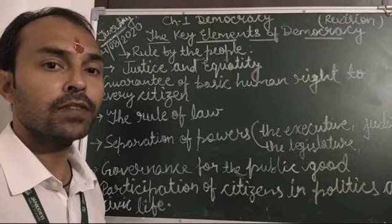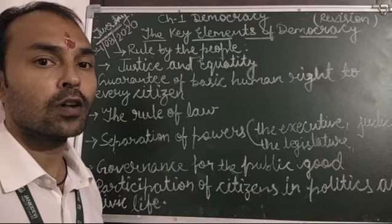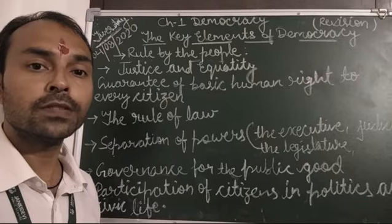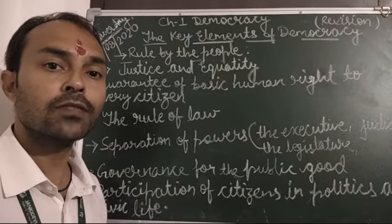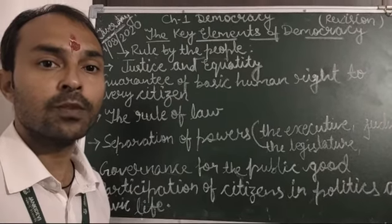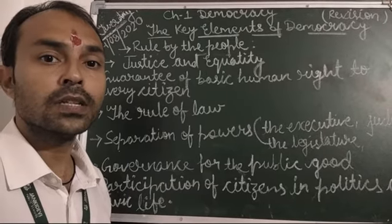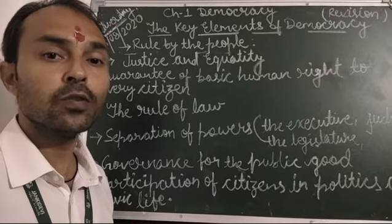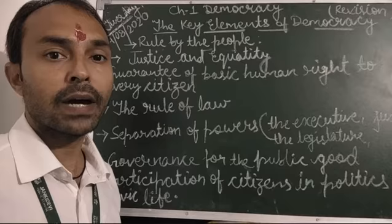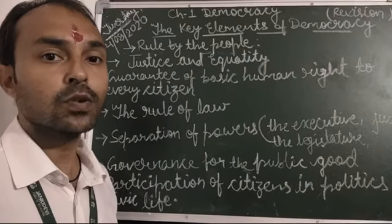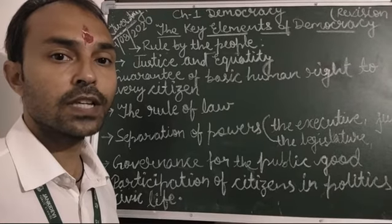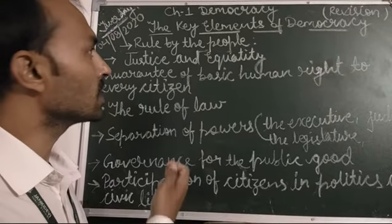In today's session we are going to learn about the key features or key elements of a democracy. First, recall from the last session what a democracy is — a form of government in which people rule over a country directly or indirectly by their elected representatives. On the basis of this definition we can list out some of its features.